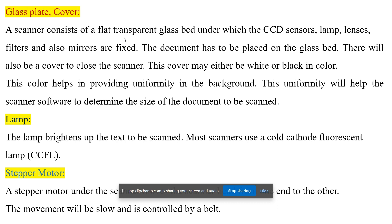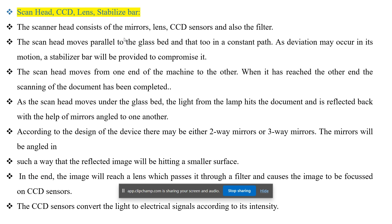The lamp brightens up the text to be scanned. Most scanners use a Cold Cathode Fluorescent Lamp (CCFL). A stepper motor under the scanner moves the scanner head from one end to the other. This movement is slow and is controlled by a belt.